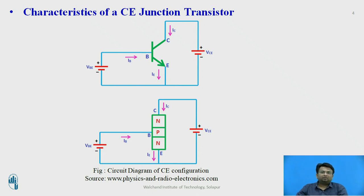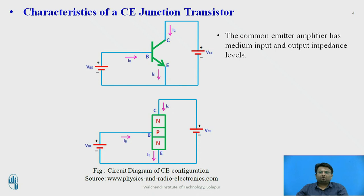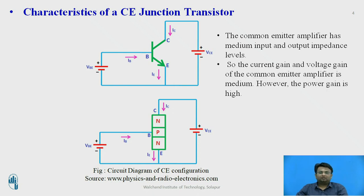The collector is connected to the positive terminal of VCE and the negative terminal of VCE is connected to the emitter. You can observe that the emitter is common — it is connected to the negative terminal of both VBE and VCE. That is why this configuration is called common emitter configuration. It has medium input and output impedance, so the current gain and voltage gain are medium; however, the power gain is high.